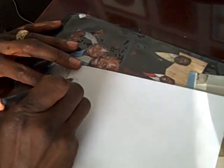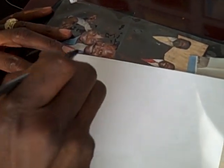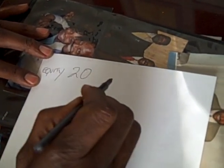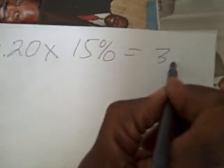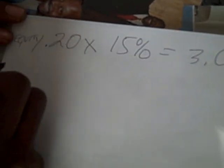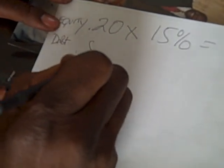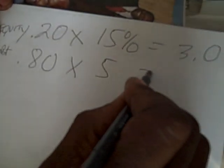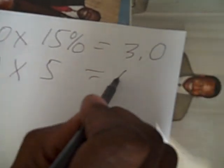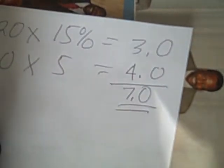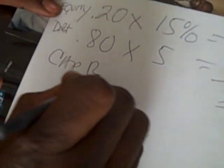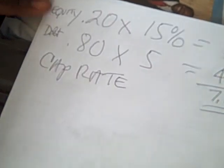Your equity is 20%, and you want a 15% cash flow — that's 20% times 15% which equals 3.0. Your debt is 80%, times the 5% constant — 0.80 times 5 equals 4.0. Add those together and that's a 7% cap rate.